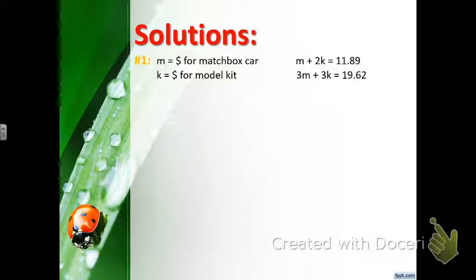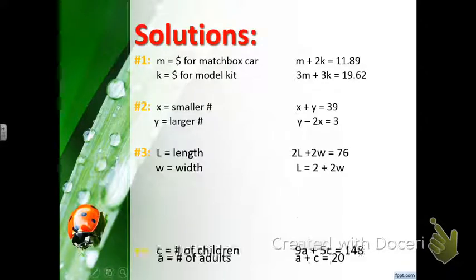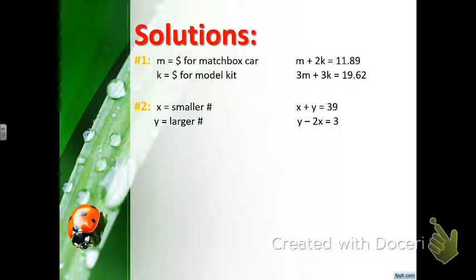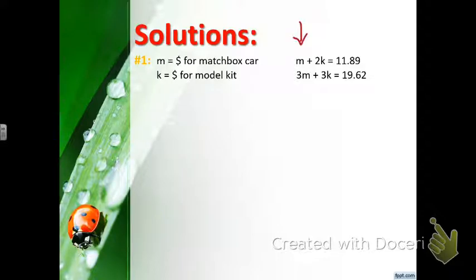For the next problem, they chose M for dollars for the matchbox car and K for dollars for the model kit. M plus 2K equals 11.89. The variables are lined up, so this is an elimination problem. The video stops here — get the other problems from the PowerPoint or in class.